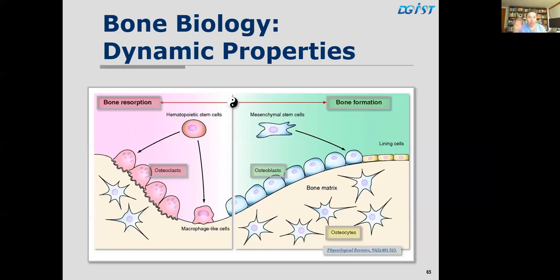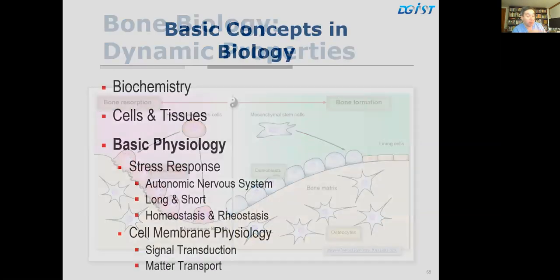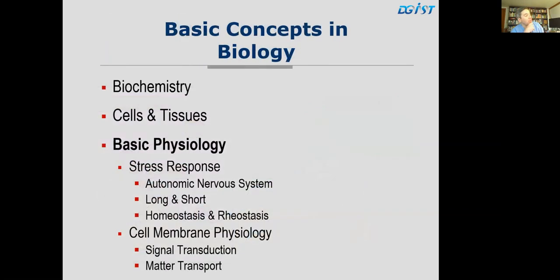Bone healing is relevant to bioelectromagnetics: stresses alter the balance of bone formation and resorption, and it has been shown that directed electromagnetic fields can help with bone healing and fractures. Now let's talk about some basic physiology. I want to cover two basic concepts: the stress response and cell membrane physiology.